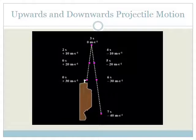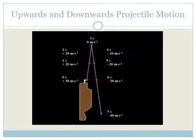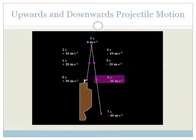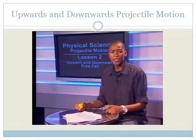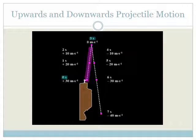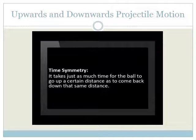There are many interesting patterns in this data. Notice the upward and downward velocity of the ball at the same height — the magnitudes are the same. For example, when the ball leaves the thrower's hand its velocity is positive 30 meters per second, and when the ball passes through that same height on the way down, its velocity is again 30 meters per second, this time negative. There is also an interesting pattern in time: it takes three seconds for the ball to travel from the hand up to its highest point, and it also takes three seconds to travel from the highest point back down to the hand. We call this time symmetry.